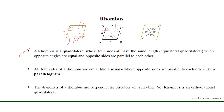All four sides of a rhombus are equal, like a square, and opposite sides are parallel to each other, like a parallelogram. The diagonals of a rhombus are perpendicular bisectors of each other, so a rhombus is also an orthodiagonal quadrilateral. The diagonal passing through the acute angle is longer than the diagonal passing through the obtuse angle.